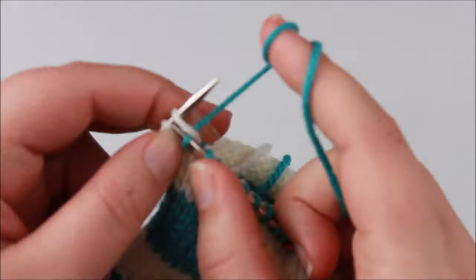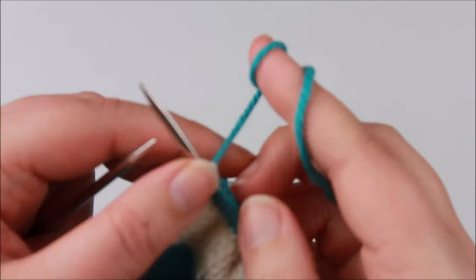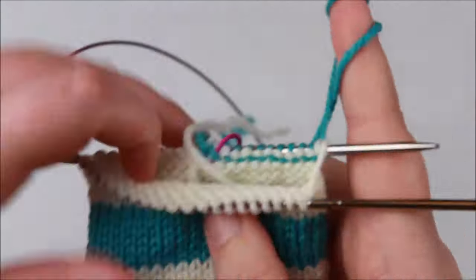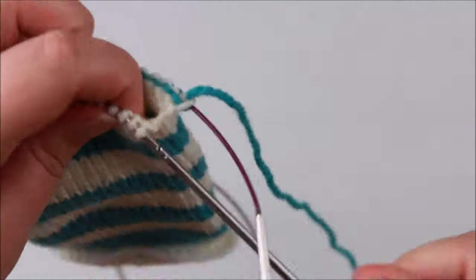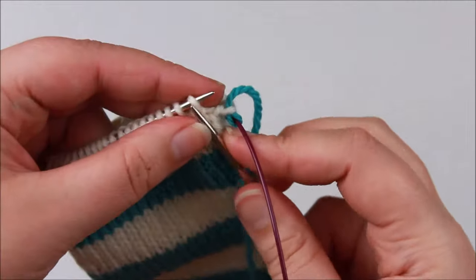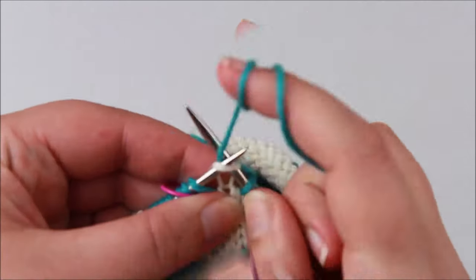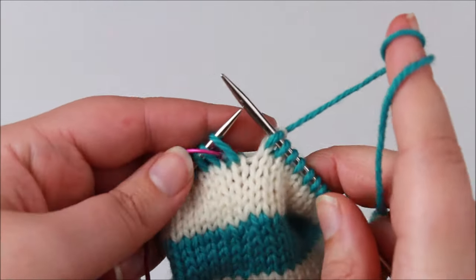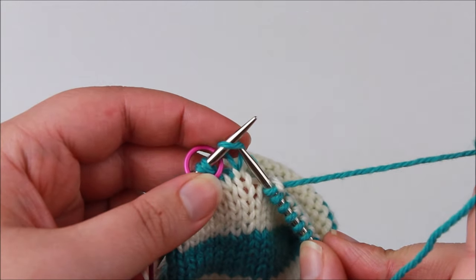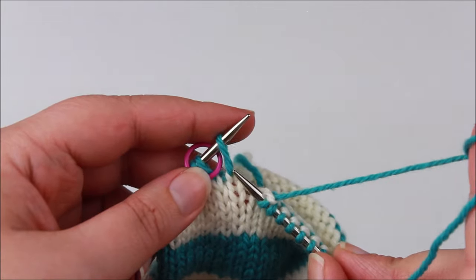So I'm just going to knit around to that beginning of round place again and then I will show you how we're going to make the stripe jogless. Alright, so I've just finished off my round to the point where there's one stitch left to go. So this is the stitch that was worked twice.